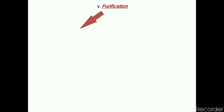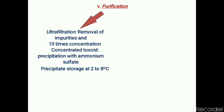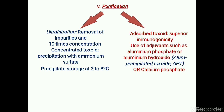If the preparation passes the toxicity test, the toxoid is ready for further purification. The first method of purification is ultrafiltration, which removes impurities and purifies the preparation on the basis of molecular weight. This is also a method of concentration. The concentrated toxoid is then precipitated with ammonium sulfate and stored at 2 to 8°C until further use.